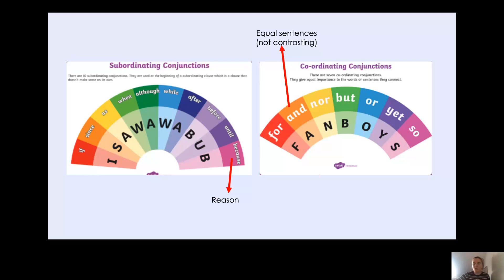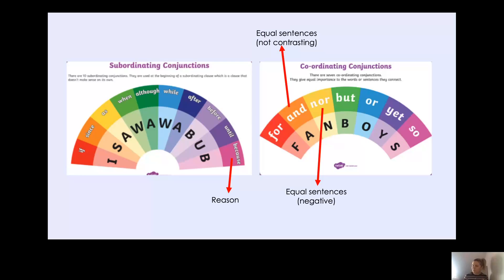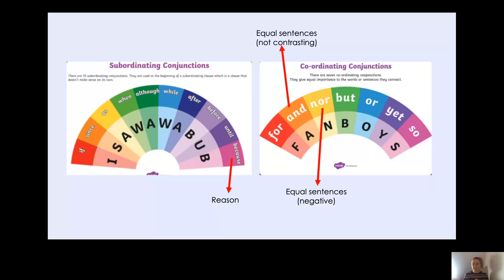What about 'nor'? Well, we use 'nor' when there are two equal sentences, but both of those sentences are negative. For example, I don't like pasta - that's negative because you don't like pasta - nor do I like burgers. So I don't like pasta and I don't like burgers: I don't like pasta nor do I like burgers. Or you could say I didn't see my friend - that's something that didn't happen, so it's negative - I didn't see my friend nor did I see my auntie. So both of those people you didn't see - both of those sentences are negative. Could you pause the video and have a think of another sentence where you could use 'nor'? I also thought of one: I didn't buy pizza nor did I buy pasta. I didn't buy pizza, I didn't buy pasta, so they're both negative because I didn't do them.